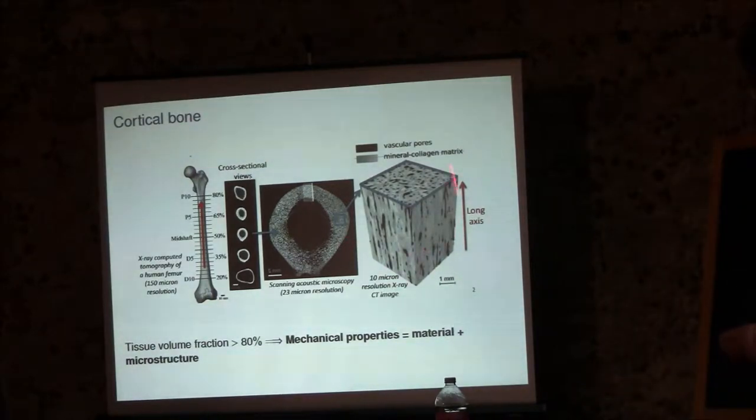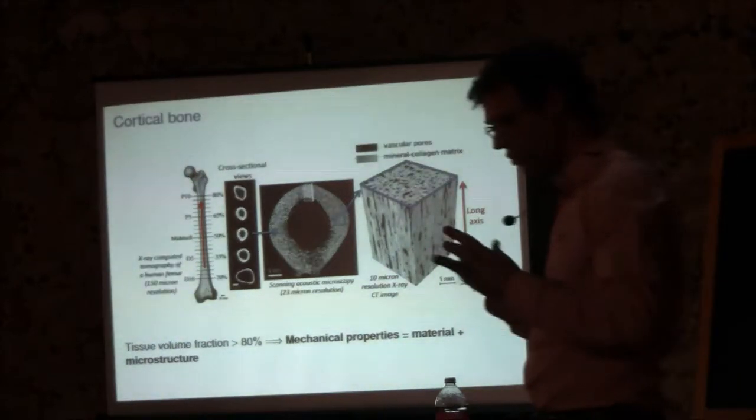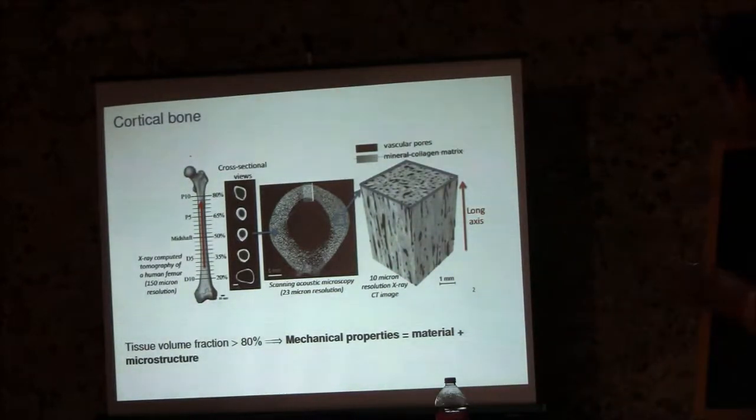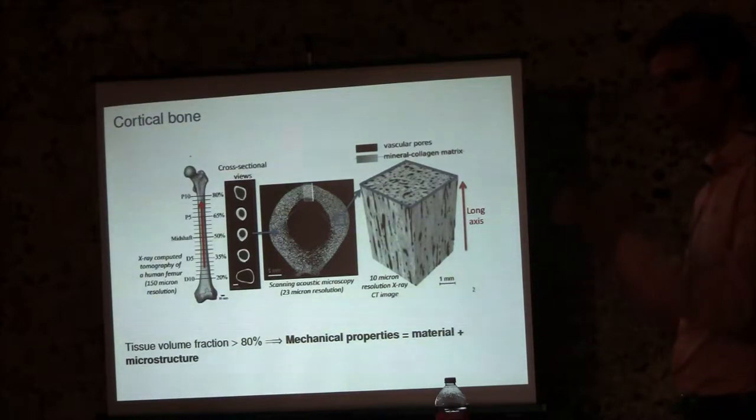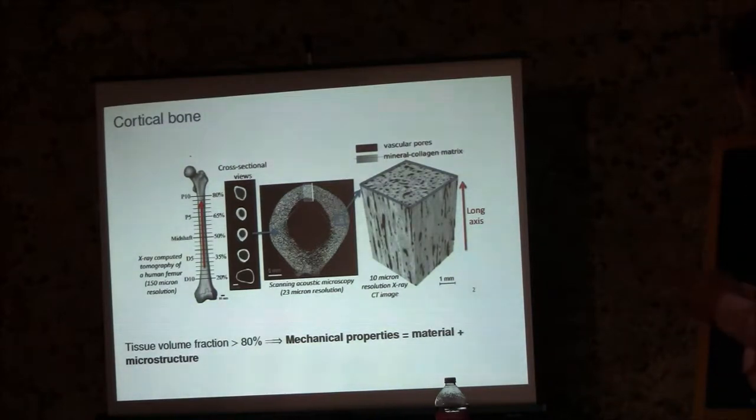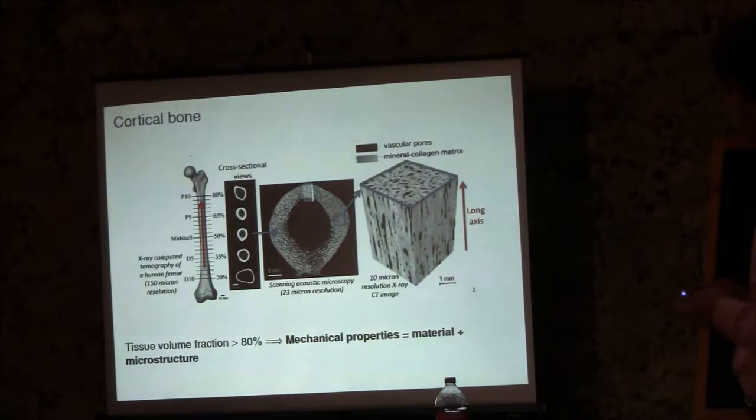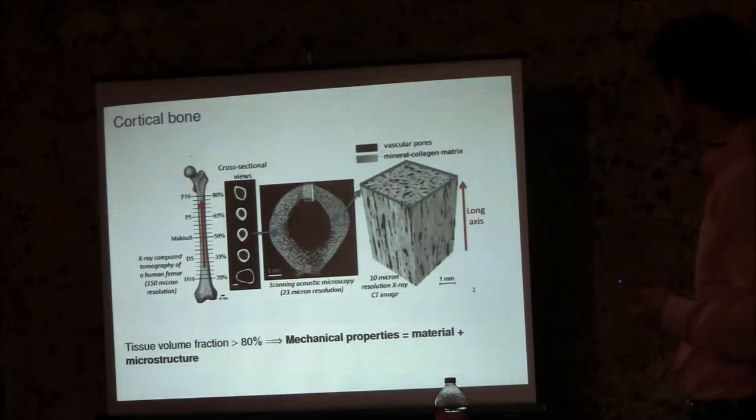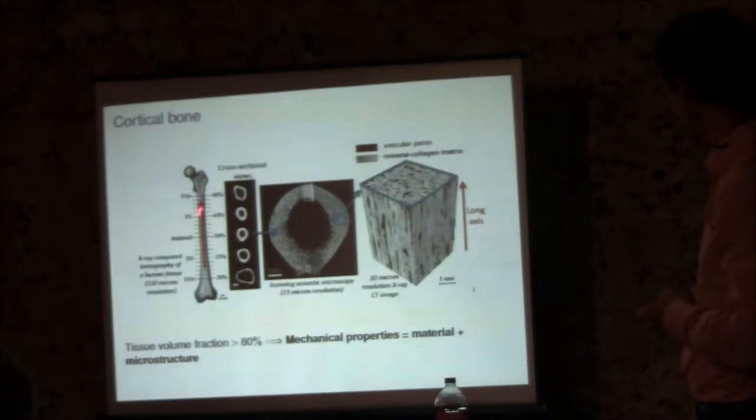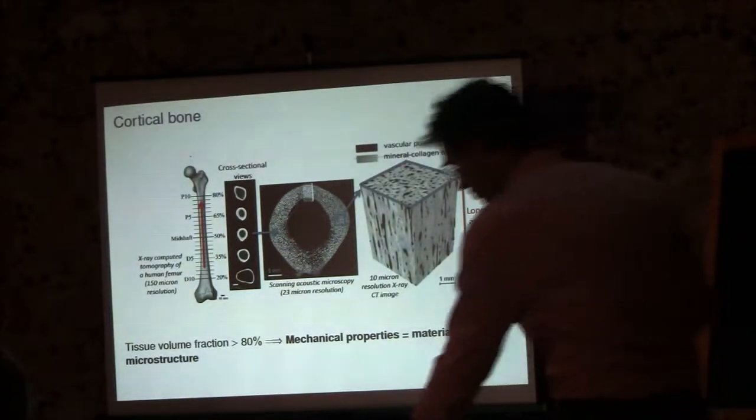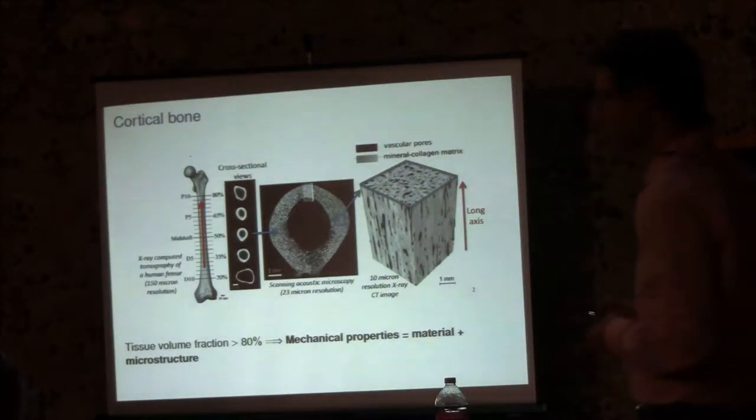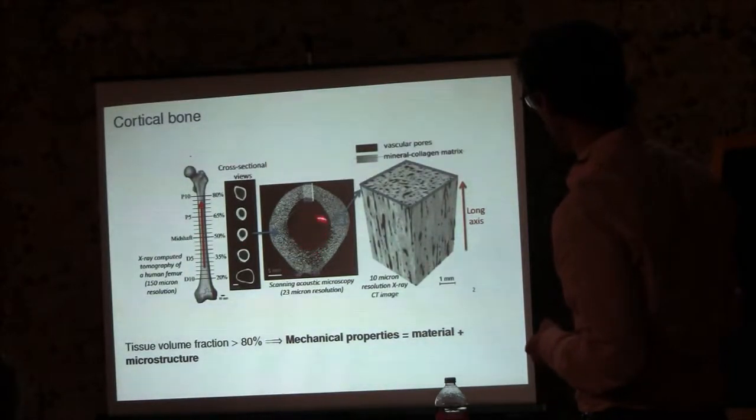So cortical bone is a dense tissue. The porosity, the pore volume fraction, is limited to say 20%. The mechanical properties of this material are a lot due to the intrinsic mechanical properties of the mineralized collagen matrix, and also, of course, to the pore volume fraction, and to the organization of this pore network to a limited extent, as we will see.